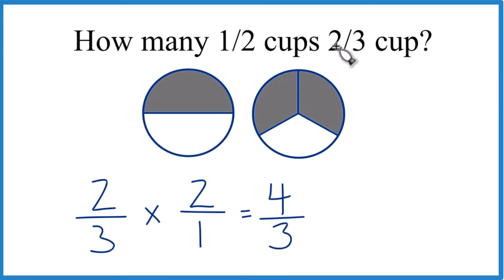So how many one-half cups go into a two-thirds cup? Four over three. Let's change this to a mixed number. It's easier to understand. Three goes into four one time, one times three is three, and we have one left over.